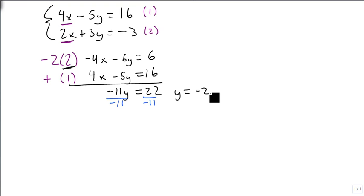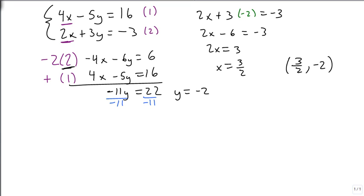So now that I know my y is negative 2, I can plug it back in to either equation, and I like equation 2 better because the x is smaller. So I'm going to get 2x plus 3 times negative 2 equals a negative 3. This is 2x minus 6 equals a negative 3. We're going to add 6 to both sides. 2x equals 3, so x is 3 halves. So my point is 3 halves, minus 2.